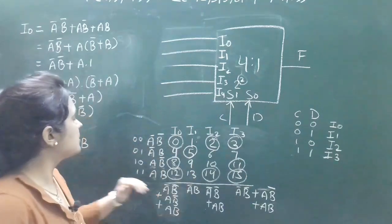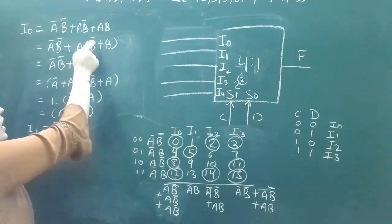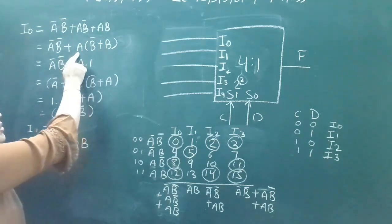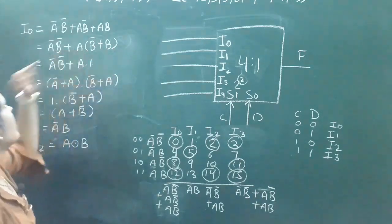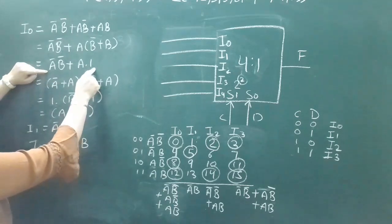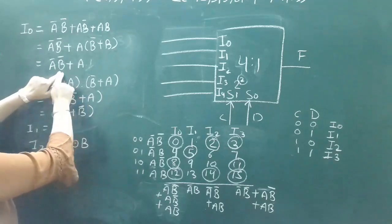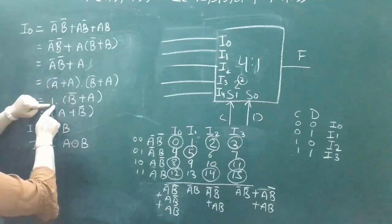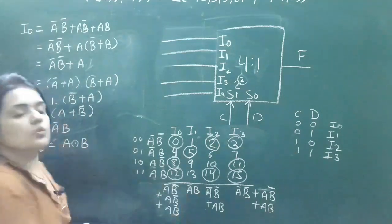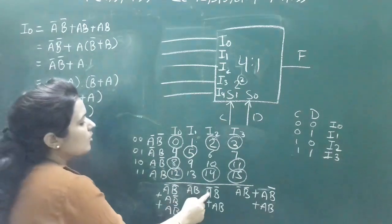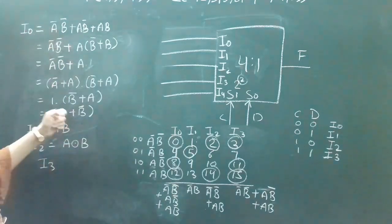Now we simplify these expressions. I0 = A'B' OR AB' OR AB. Taking A' common: A'B' OR A(B' OR B) = A'B' OR A (since B' OR B = 1). Similarly, A'B' OR A can be simplified using Boolean algebra: (A' OR A)(B' OR A) — wait, distributing gives A OR B'. So I0 simplifies to A OR B'. I1 = A'B (cannot be simplified further). I2 = A'B' OR AB simplifies to A XNOR B.